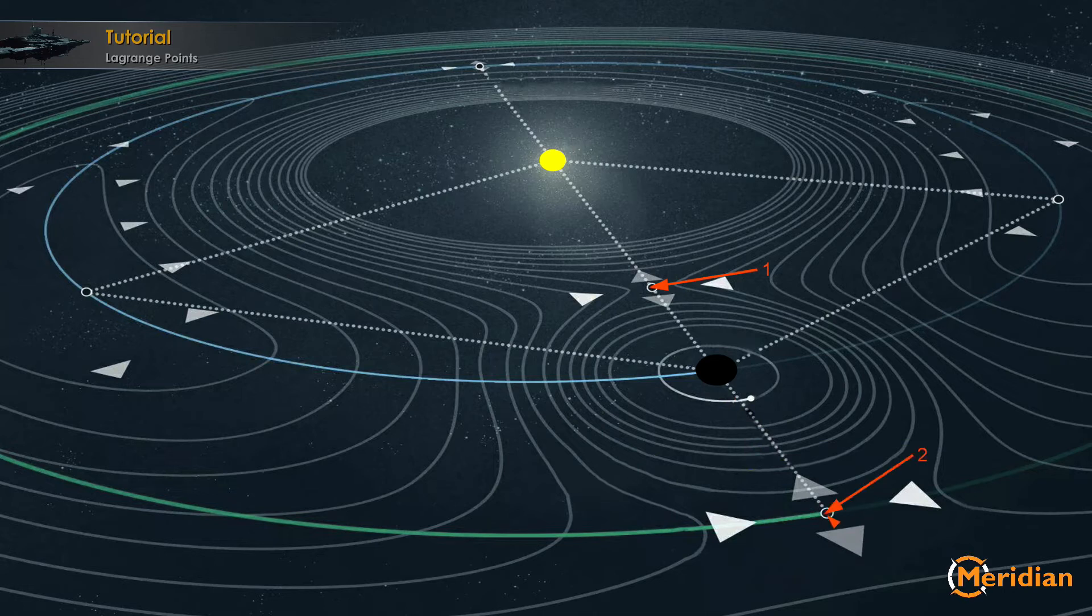The second Lagrange point is directly behind the planet. And the third Lagrange point is on the opposite direction of the Sun or star. And we have also two other Lagrange points.